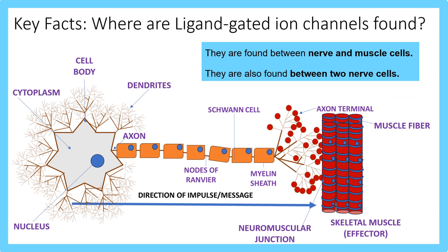Where are ligand-gated ion channels found? There are two common places: nerve and muscle cells, and between two nerve cells. Here you have an example of a nerve cell known as a motor neuron. There are three main types of neurons: sensory, relay, and motor neuron. The sensory neuron passes information from the sensory organ to the central nervous system, which is the processing center.